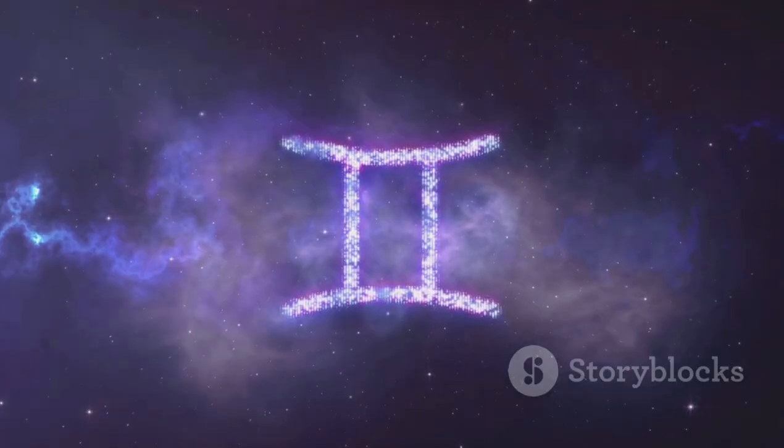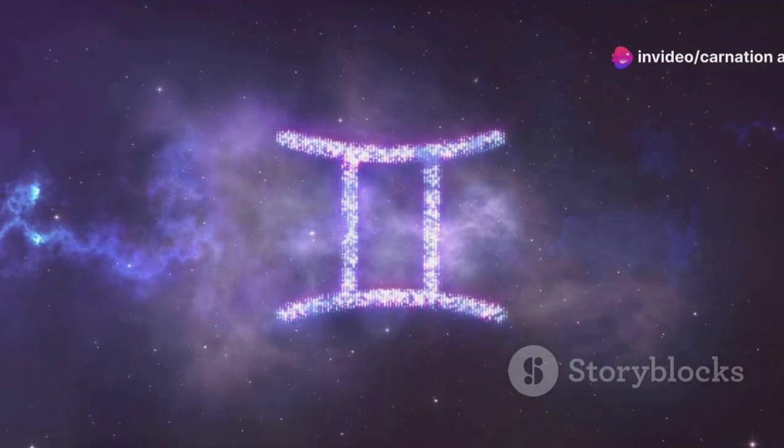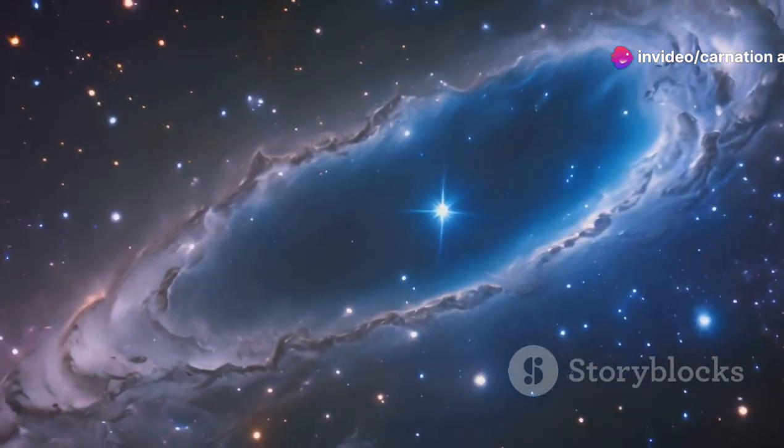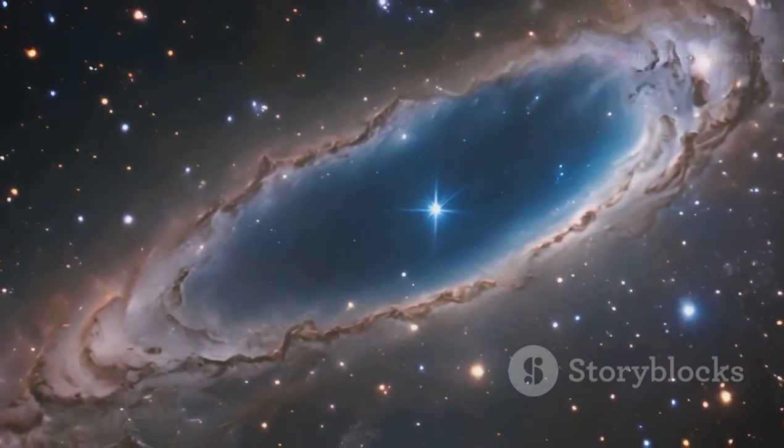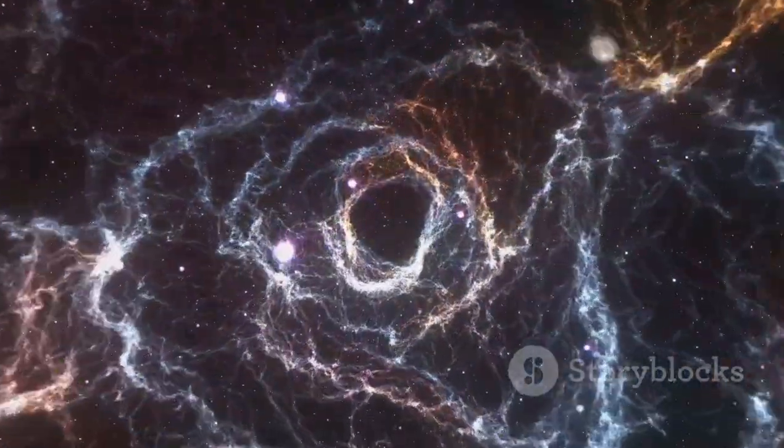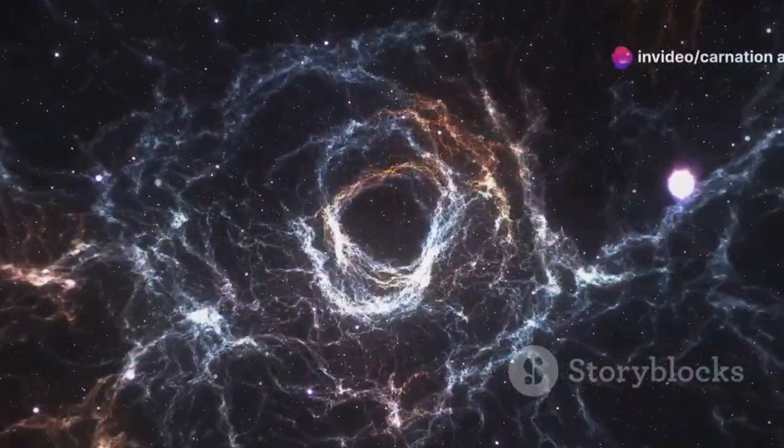The nebular hypothesis is the leading theory explaining the formation of our solar system. According to this hypothesis, our solar system began as a giant cloud of gas and dust, often referred to as a nebula. Over time, the gravitational forces within the nebula caused it to collapse inward, forming a spinning disk.